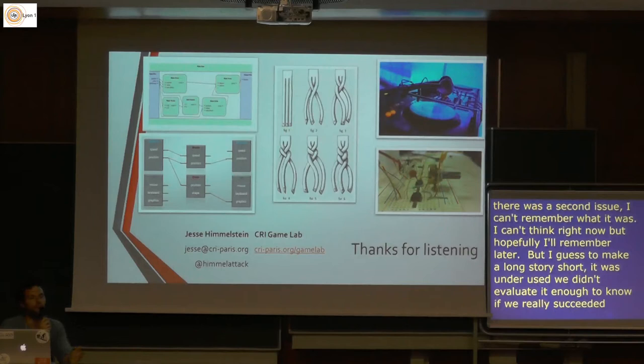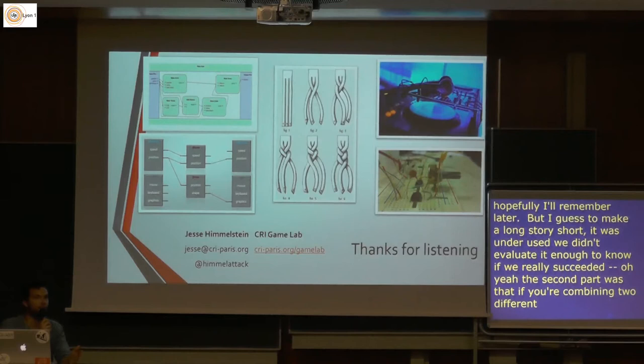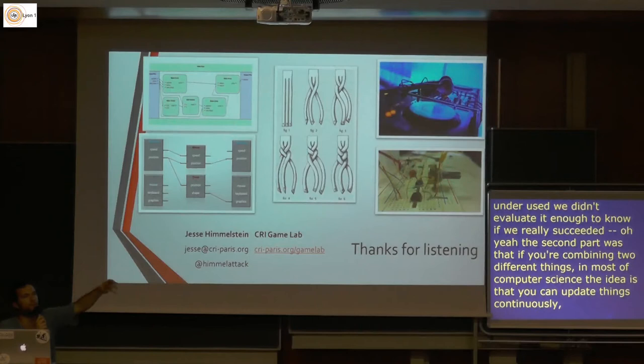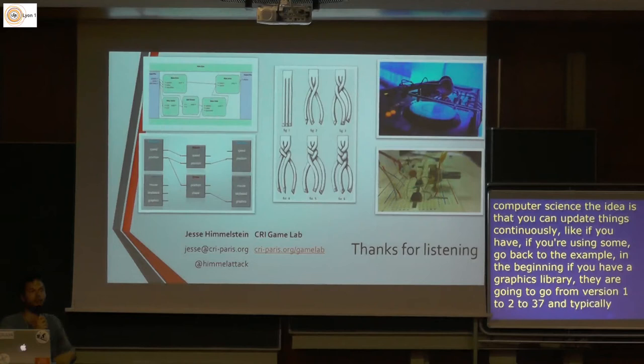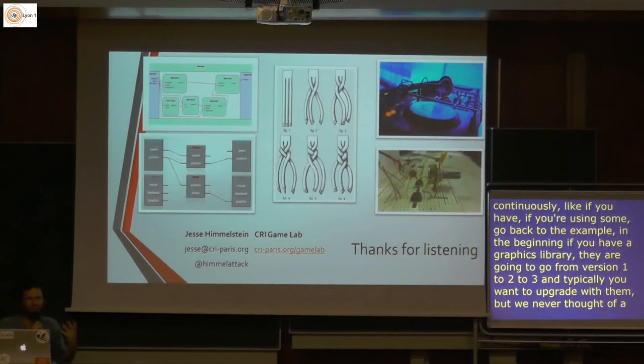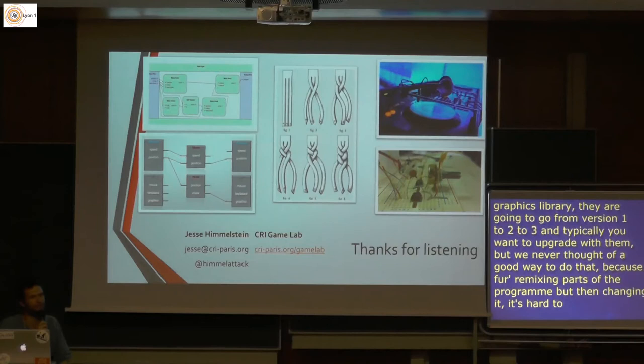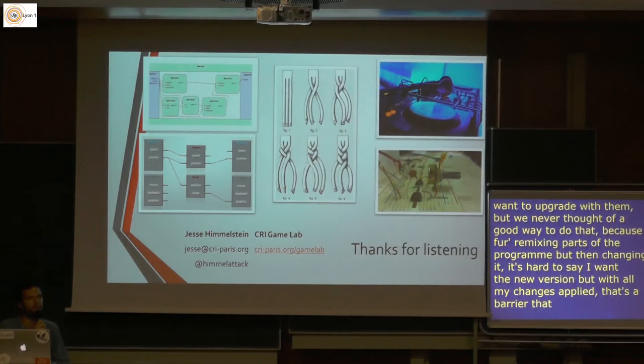The second issue with combining two different things: in most of computer science, the idea is you can update things continuously — going back to my earlier example, if you're using a graphics library, it'll go from version one to version two to version three, and you typically want to upgrade. But we never found a good way to do that here, because if you're remixing whole parts of the program and then changing it, it's really hard to say 'I want the new version but with all my changes applied.' That was a barrier we never figured out a good way around, and I don't know if other projects have found a solution to that.